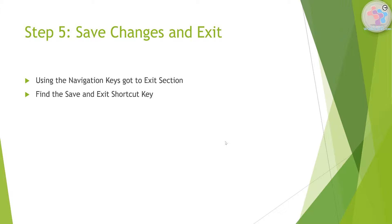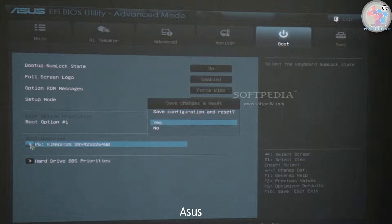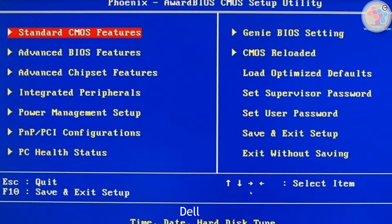After making all three changes, the last step is to save and exit from the BIOS. Find the Exit section or the shortcut key for saving and exiting. You can press the shortcut key or navigate to the Exit section and select 'Save Changes and Exit.' For ASUS, press F10 to save, then confirm with Yes. For Dell, click 'Save and Exit Setup' and confirm your action — your settings will be saved and the system will reboot.